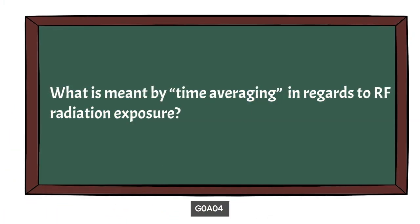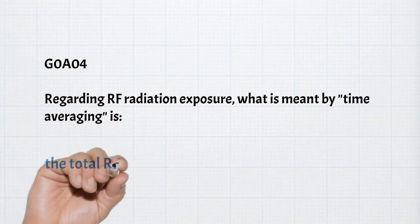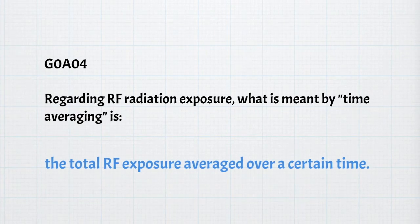For safety, we also need to know what is meant by the term time averaging in regards to RF radiation exposure. Time averaging is a method used to find an average level of RF radiation at a given point. For example, you could use a field strength meter to take a measurement every 15 minutes for 8 hours and then average those readings — simple math. For the exam, you need to know that time averaging means the total radiofrequency exposure averaged over a certain period of time.